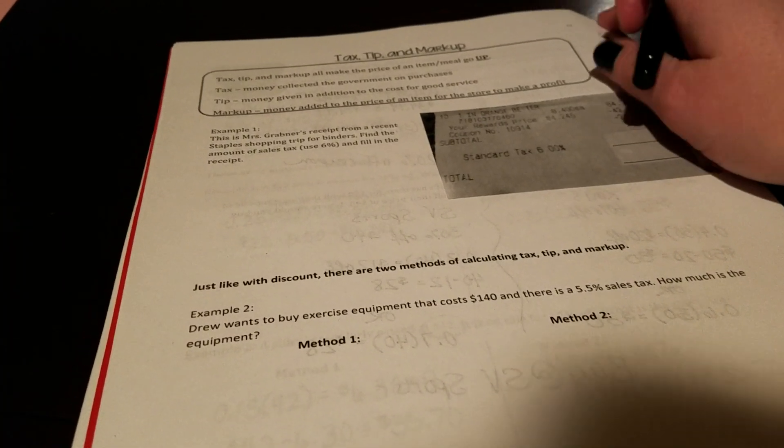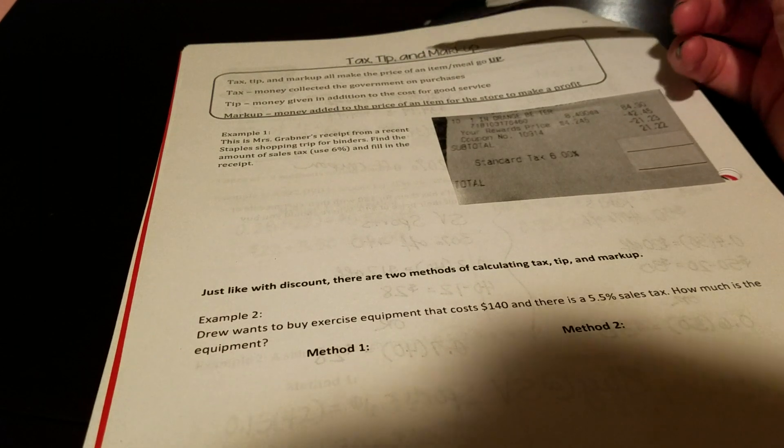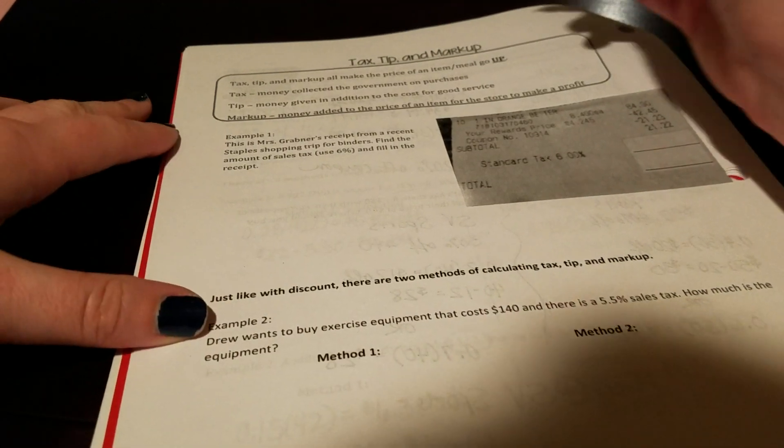All right. Our next lesson is on tax, tip, and markup. Tax, tip, and markup all make the price of an item or a meal go up.